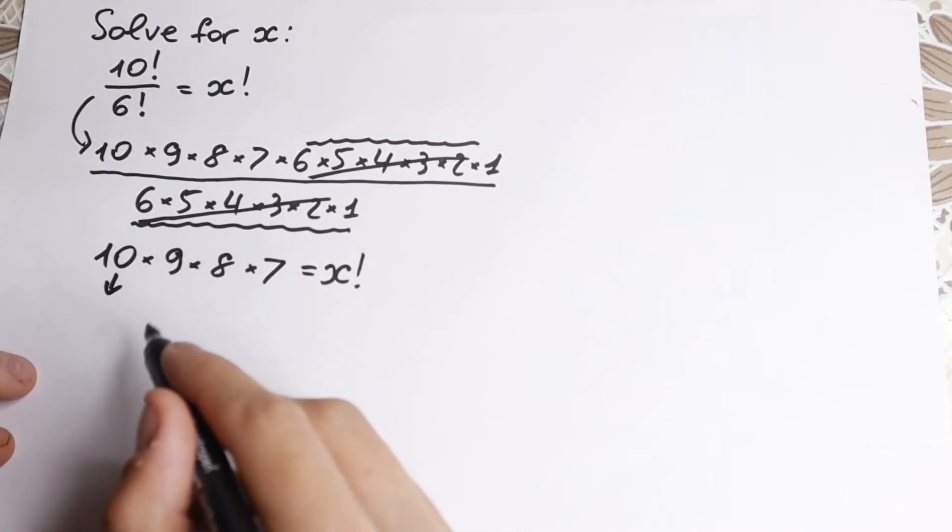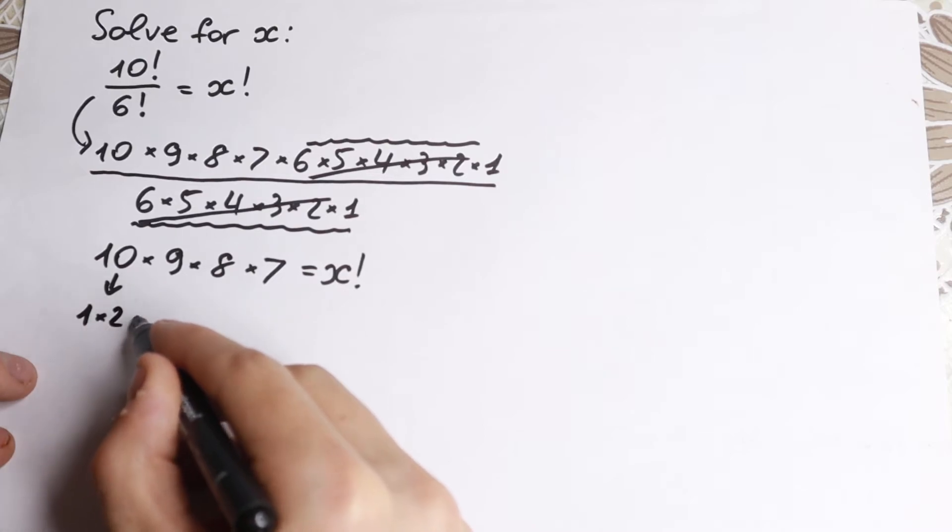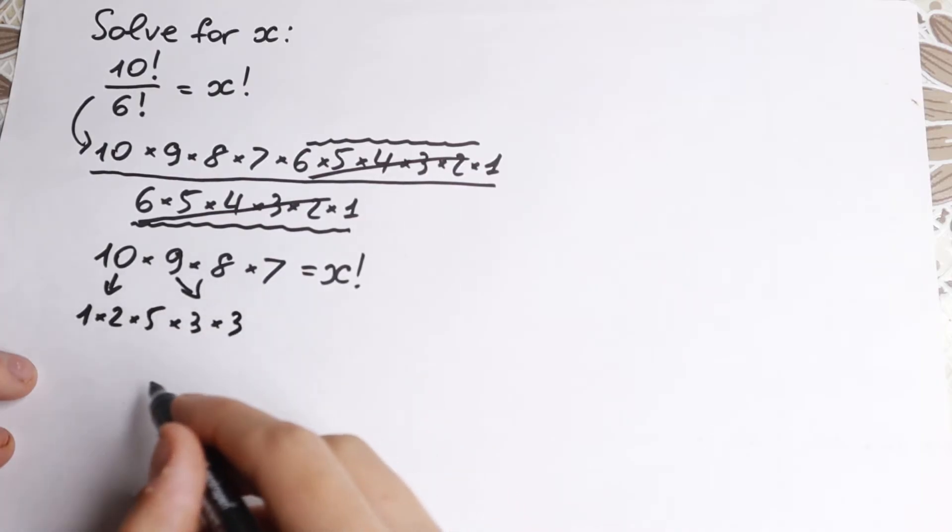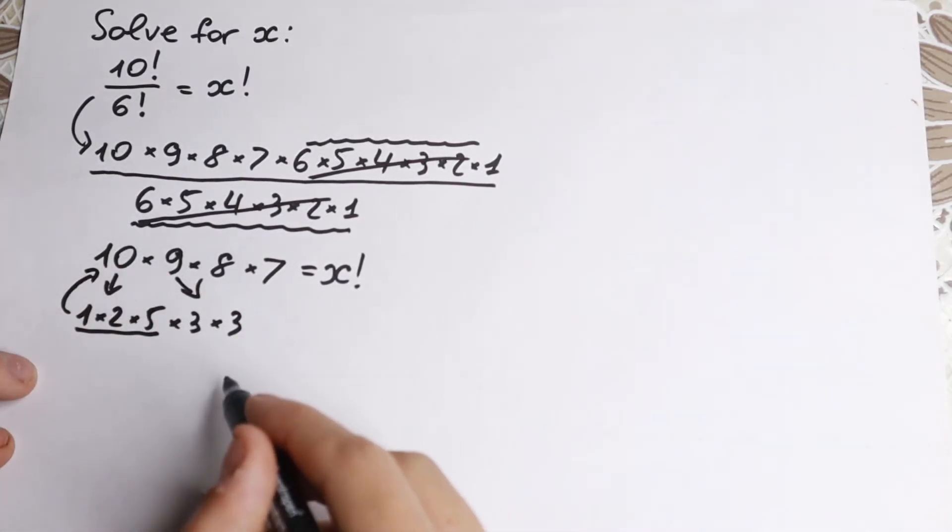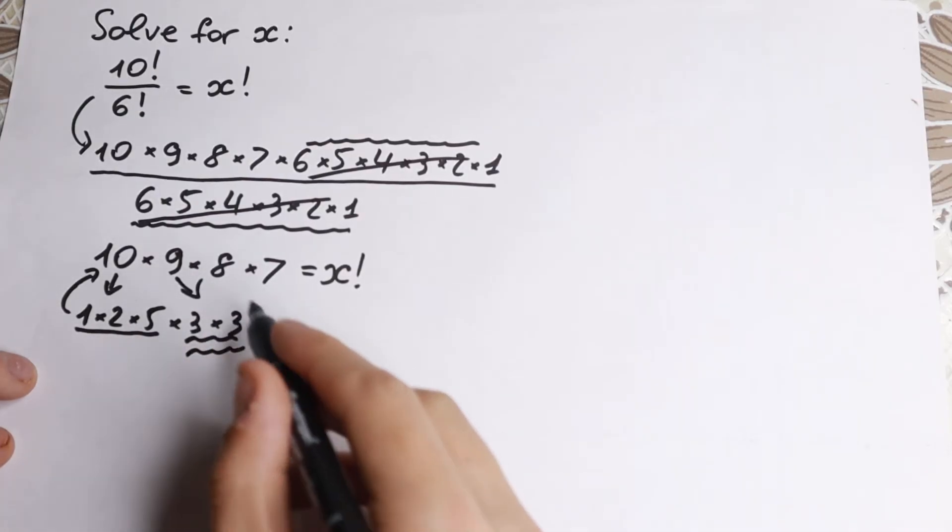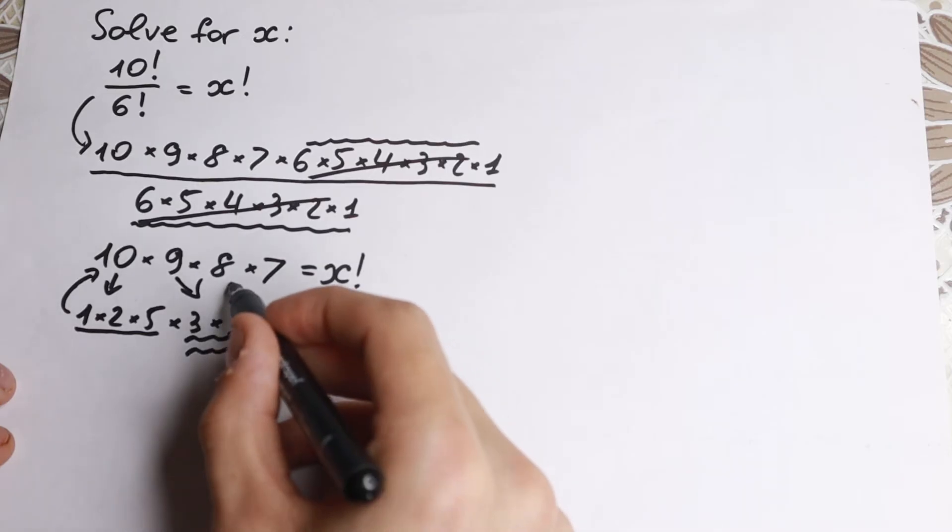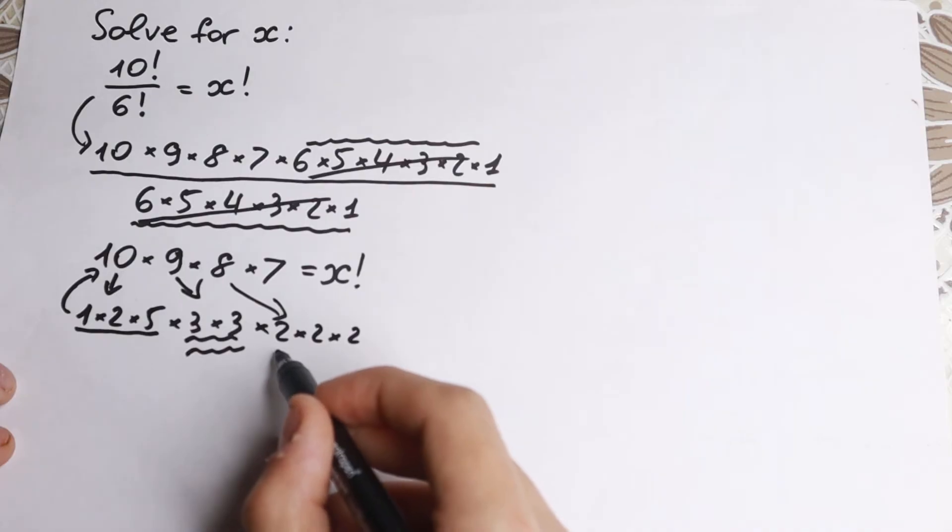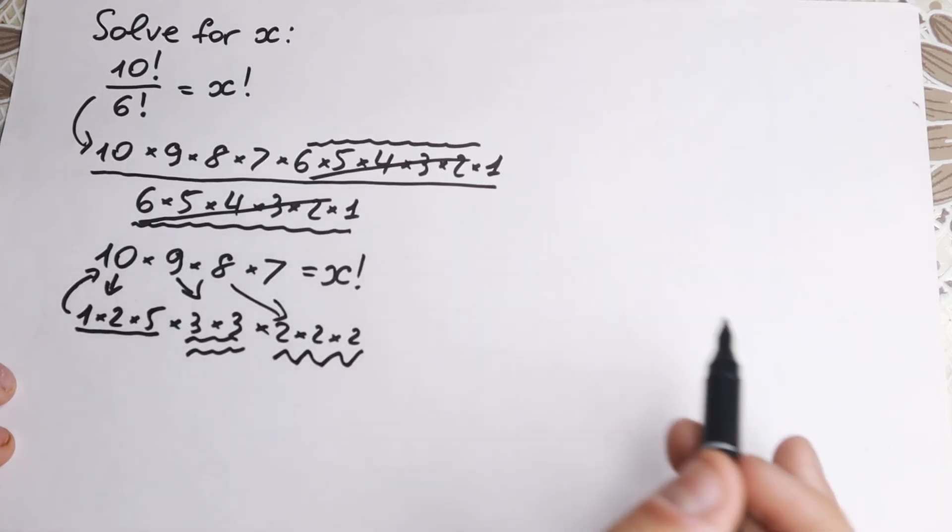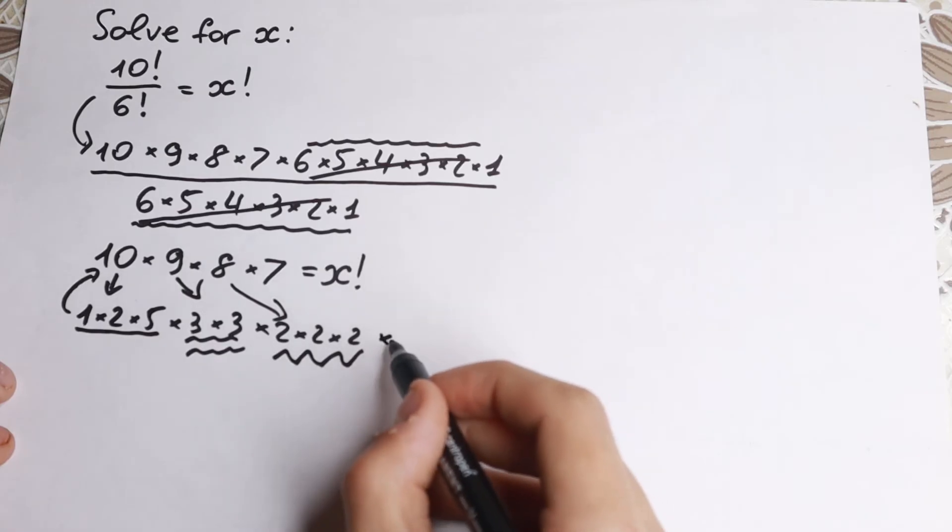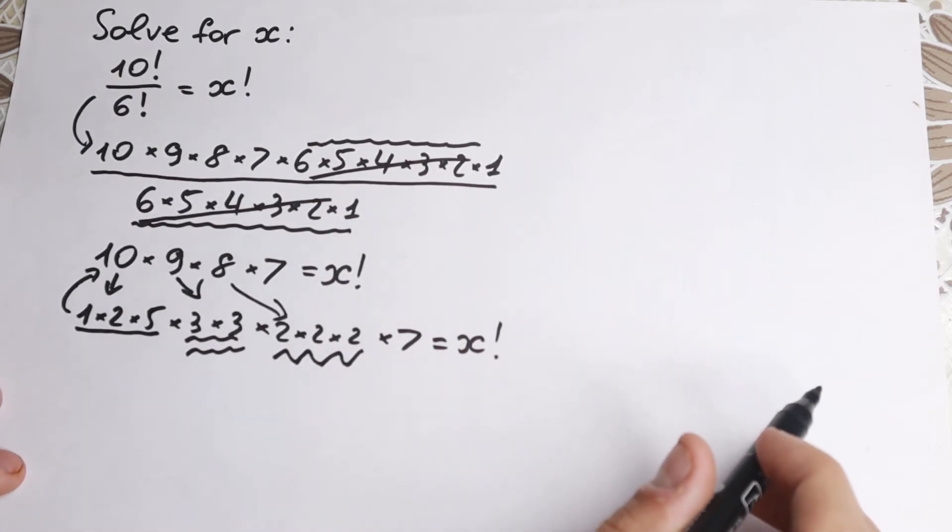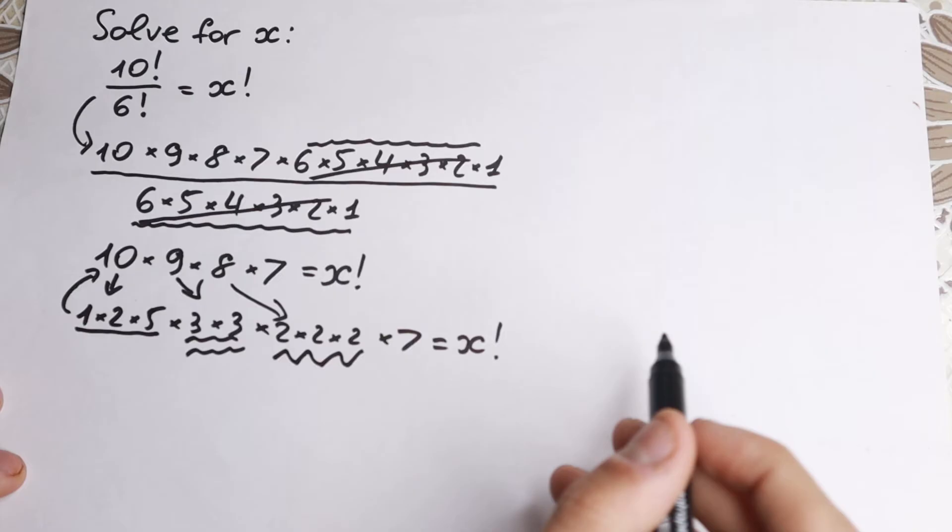10 we can easily write as 1 times 2 times 5. 9 we can write as 3 times 3. So this is our 10 right here. This is our 9. Then 2 times 2 times 2 because this is our 8. So times 2 times 2 times 2. This is our 8. And 7, 7 is a prime number. So we still have this 7 like that. So 7 equal to x factorial. And right now, what is the main idea? How can we solve it? Let's try to step by step create this factorial, to express these all elements as a factorial.